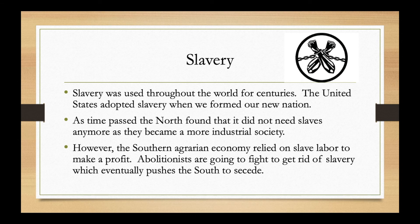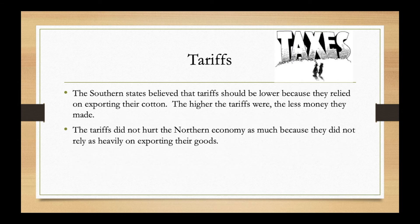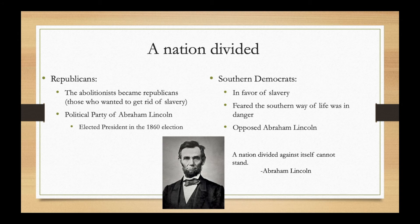Eventually the South would secede. The fourth cause is tariffs — the U.S. government started putting tariffs on imported goods, especially from the South, charging people to bring in cotton. The South relied on the North to refine their raw cotton into usable products, so these tariffs crippled the South's economy. The tariff kept getting raised, meaning the South was making less and less money, adding to the growing tensions.